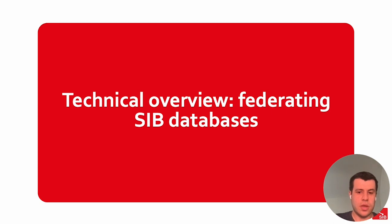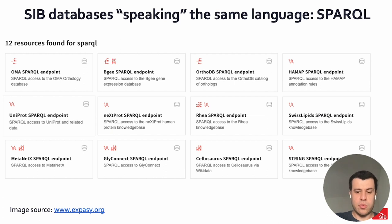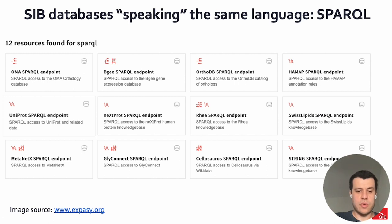Now I will give you a technical overview of how we federate these SIB databases in more detail. To implement this semantic web of data at the Swiss Institute of Bioinformatics, we made the databases respect the same language, to be able to query those different databases with the same technical query language. The query language we chose was SPARQL. Each individual SIB database developed their own SPARQL endpoint — a point of presence on the web capable of receiving and processing SPARQL protocol requests. Currently, we have 12 SPARQL endpoints, and you can check more information about them at the Expasy website.